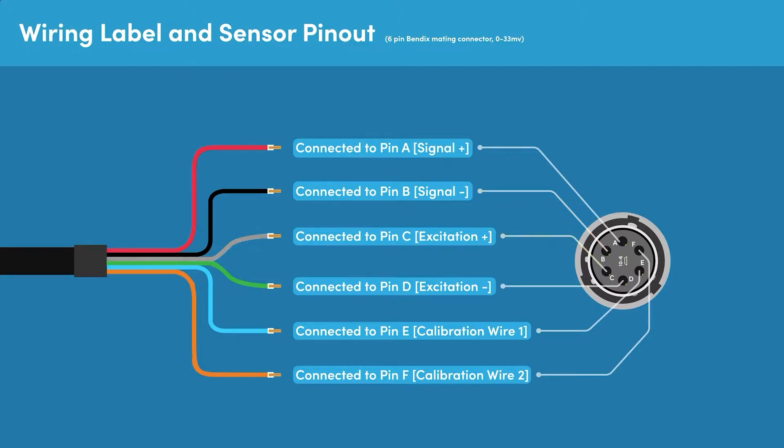The white wire is connected to pin C and is excitation positive. The green wire is connected to pin D and is excitation negative. The blue wire is connected to pin E and is calibration wire 1. And the orange wire is connected to pin F and is calibration wire 2.